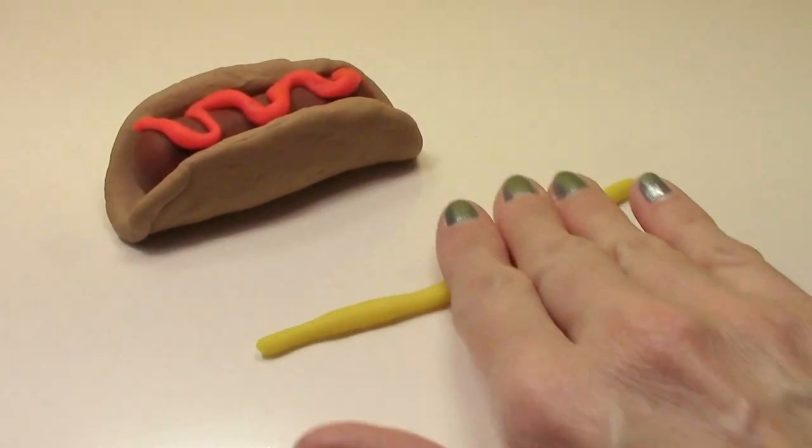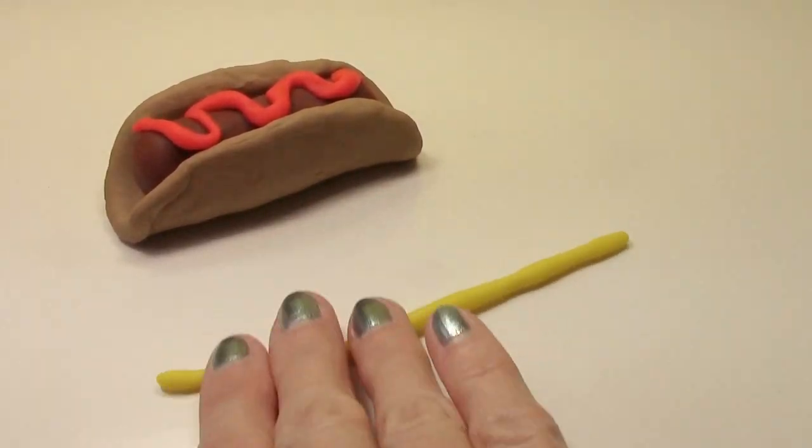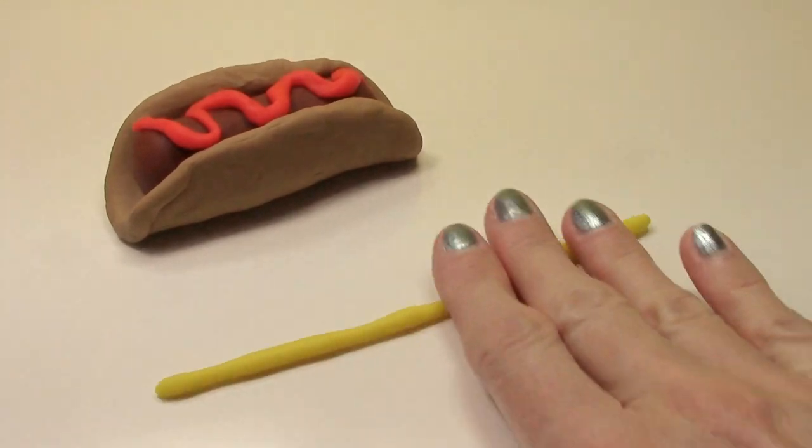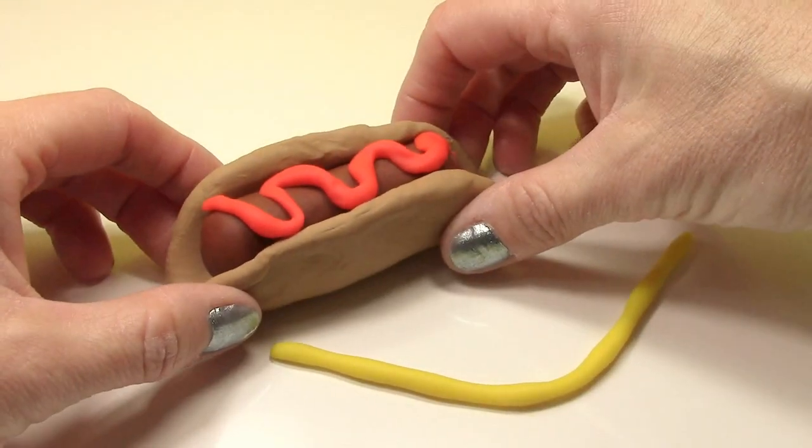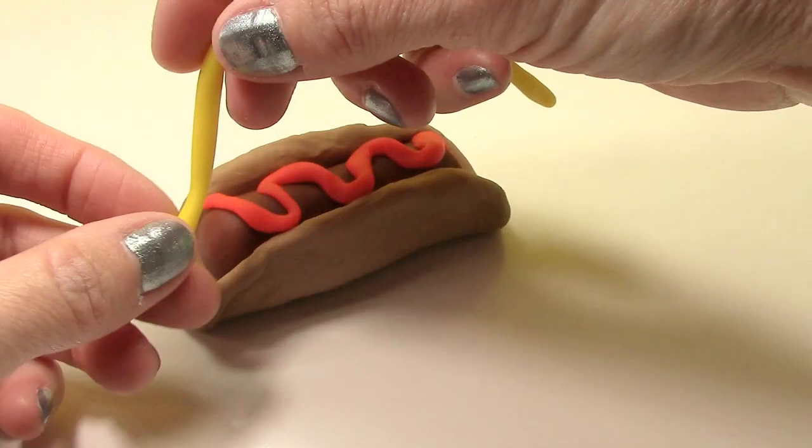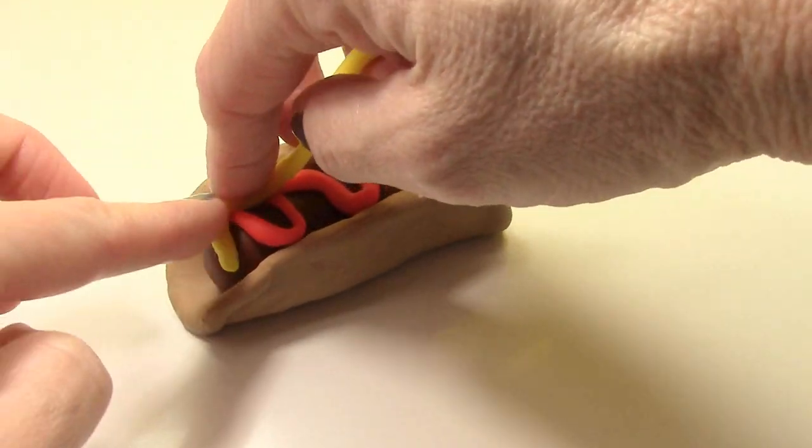Now I'm just rolling out this bright yellow Play-Doh to use for the mustard. Just press this down on the hot dog as you go so that it sticks.